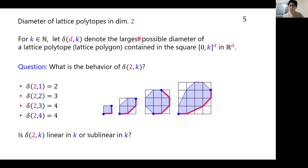Let me show the diameter of lattice polytopes in dimension 2. I use the notation delta(d,k), which denotes the largest possible diameter of a lattice polytope contained in the hypercube [0,k]^d. In dimension 2: delta(2,1) = 2, delta(2,2) = 3, delta(2,3) = 4, but delta(2,4) = 4 as well. In dimension 2, the number of vertices equals the number of edges, and the diameter is almost half the number of edges.